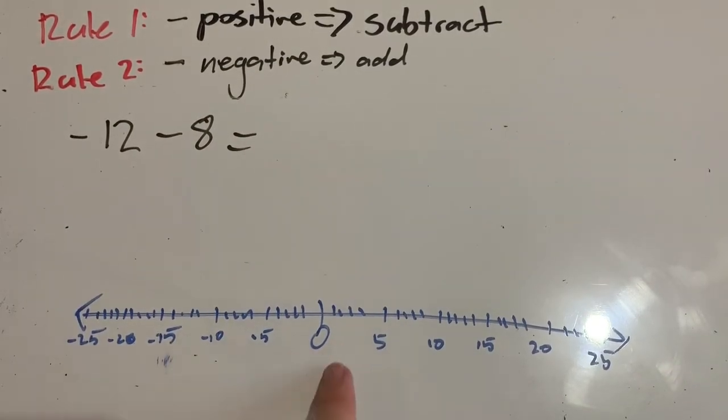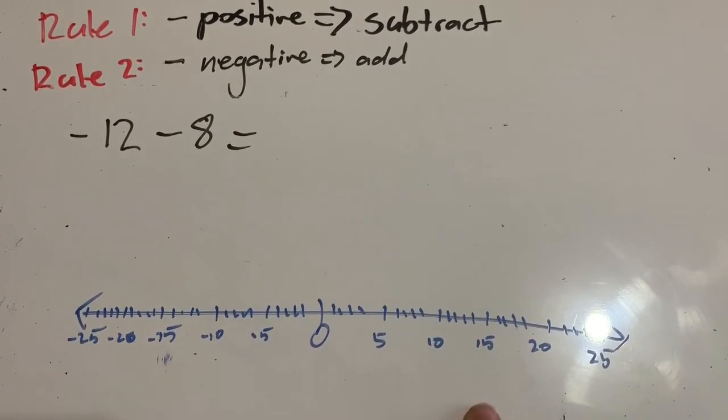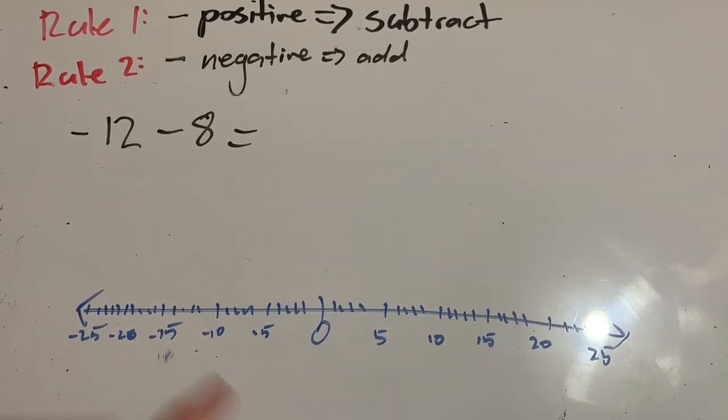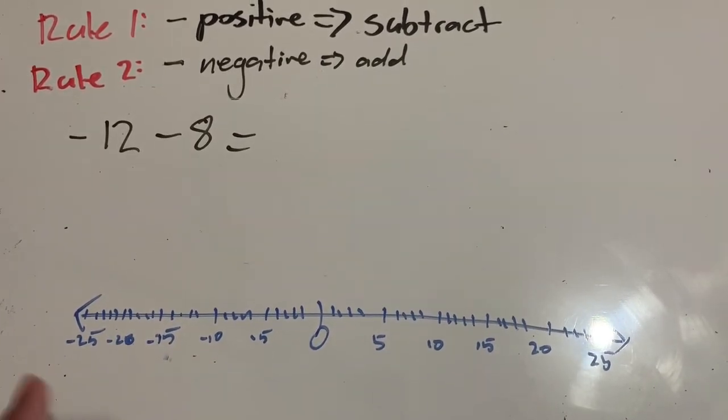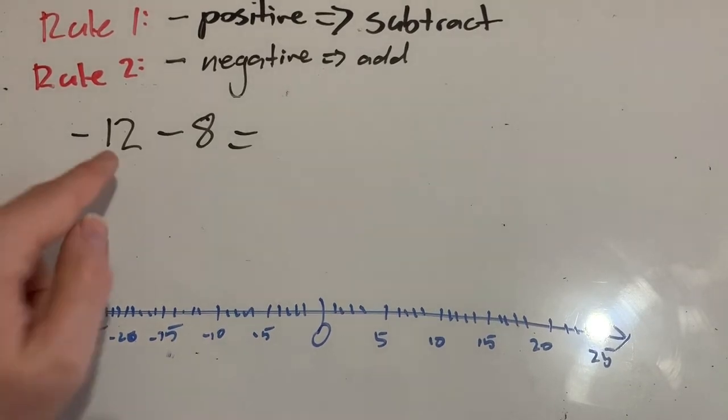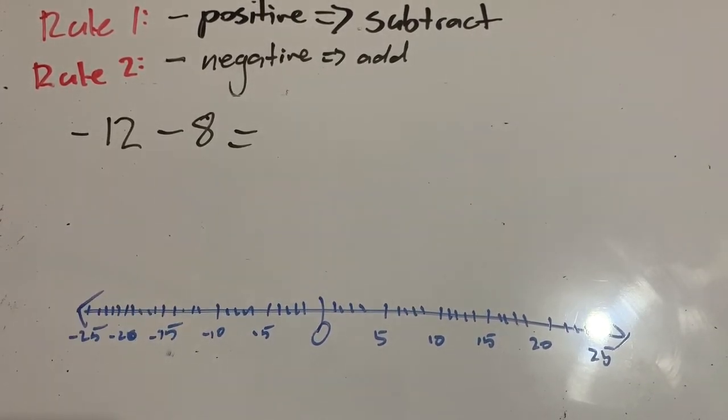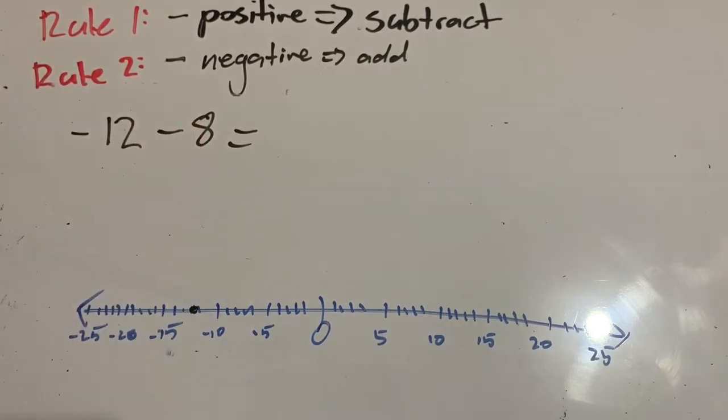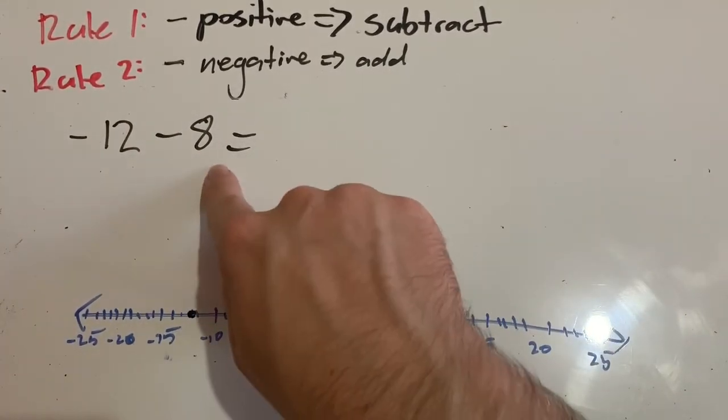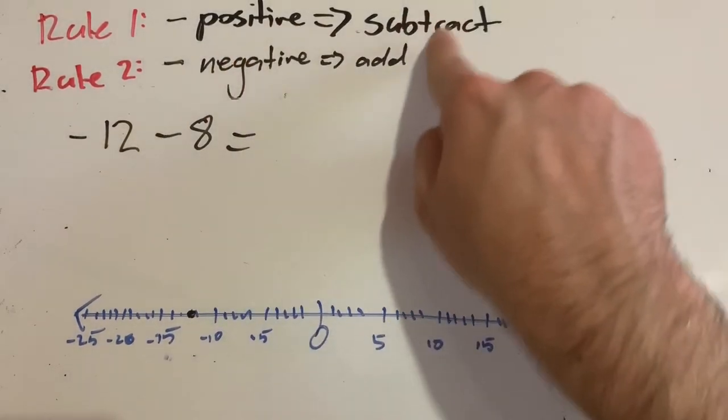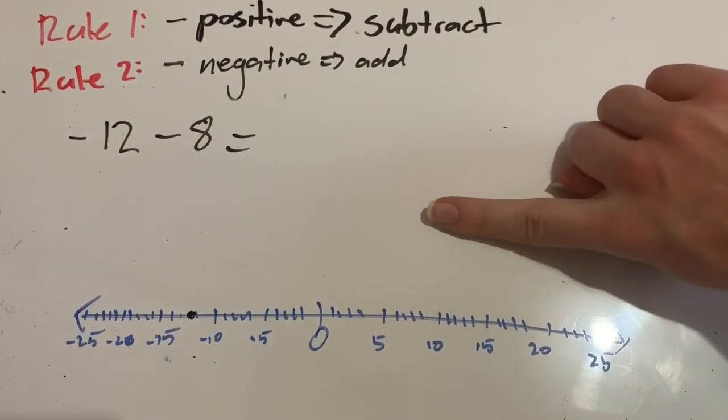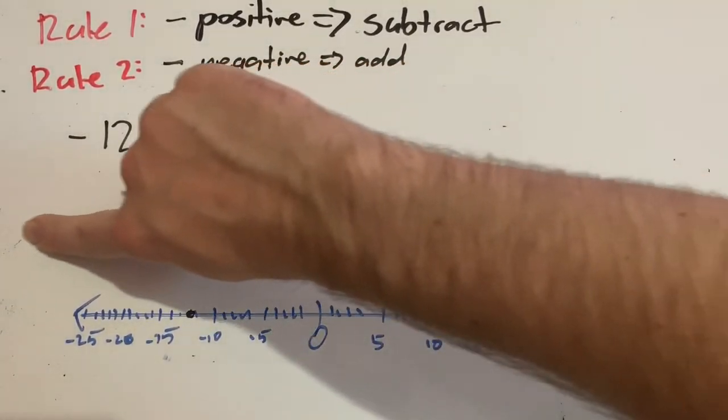So I've got a number line here, 0 in the middle, negative numbers to the left, positive numbers to the right. Notice how they're kind of like a mirror of each other, but this side have got negative signs because they are less than 0. That negative sign just means we're less than 0. Let's find negative 12. That is this one. So negative 10, negative 11, negative 12. Now I want to subtract 8. So I'm subtracting a positive, which is subtraction, just regular subtraction. So I'm moving from right to left. I'm getting smaller.